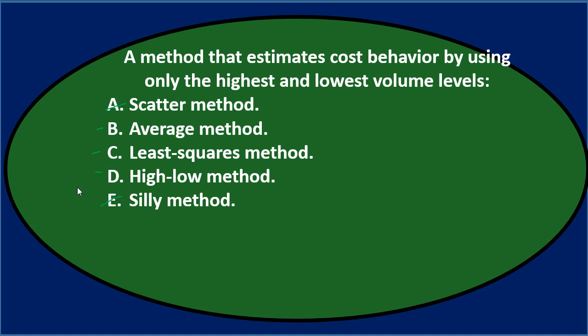We'll go with B, C, and D. A method that estimates cost behavior by using only the highest and lowest volume levels — either B, average method; C, least squares method; or D, high-low method. Of those three, D sounds like it fits almost too well, but it also sounds familiar. The high-low method should be familiar. You could note that it seems like a kind of average because we're averaging the high and low. You could argue that B is therefore correct in some way; however, probably not going to win that argument because D is more proper and that's the term typically used. You'd probably want to go with the most correct answer, even though you could make a case for average.